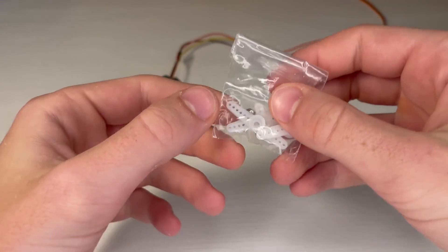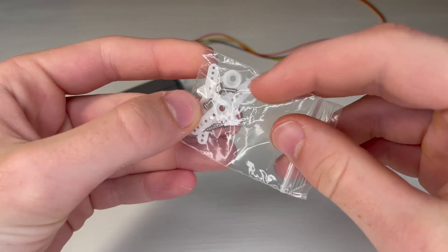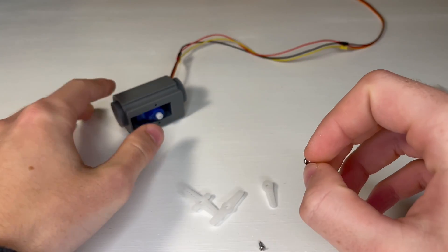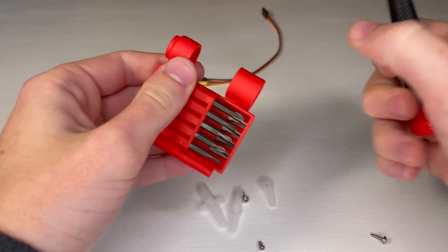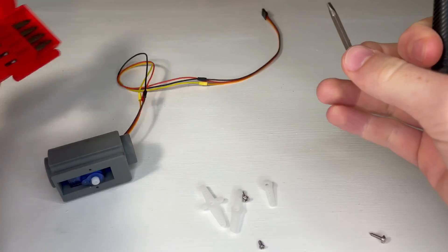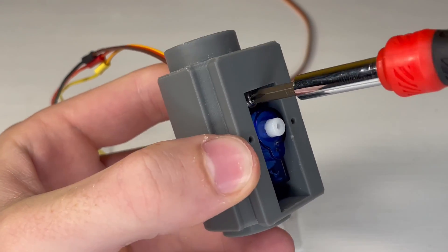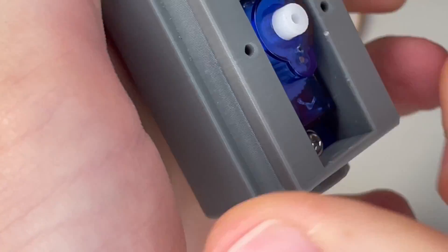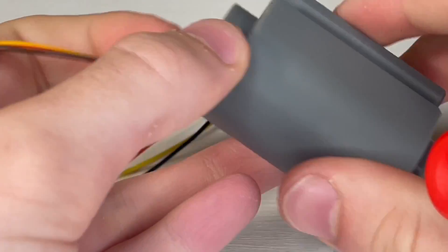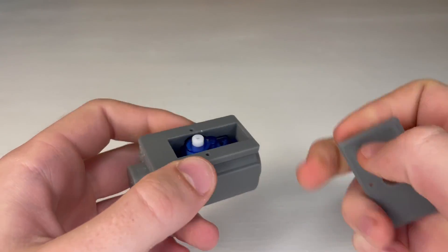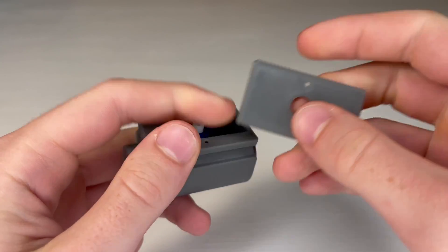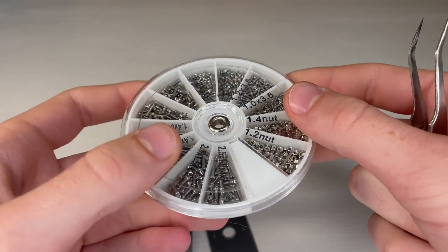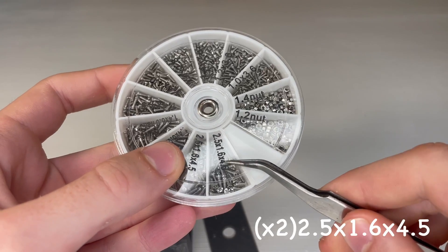Then you can screw it down using the two longer screws included in the servo attachment bag. Once that's screwed down you can attach the servo cover to the gripper piece. And for this we'll use two of the screws shown on screen.